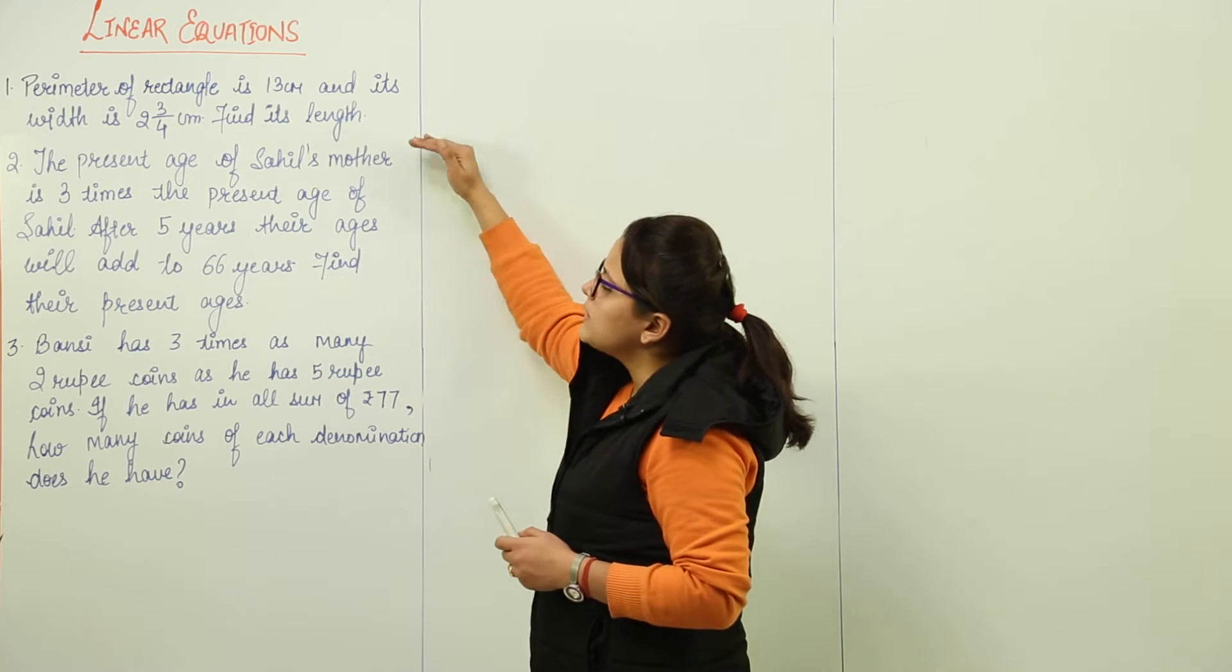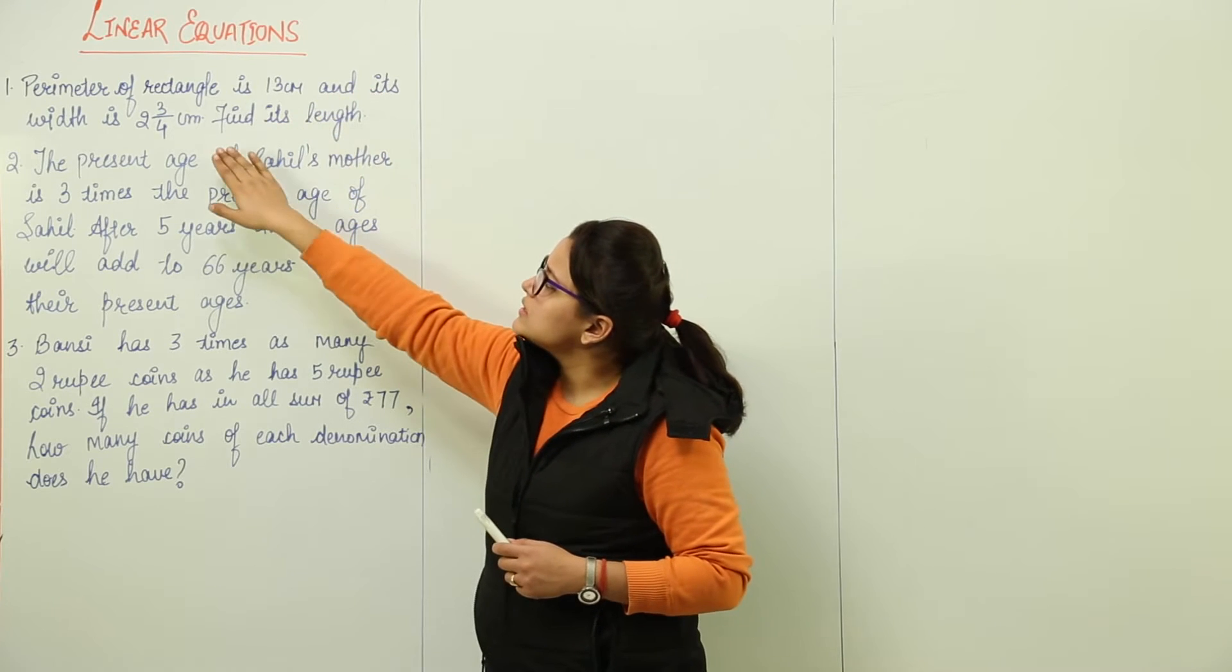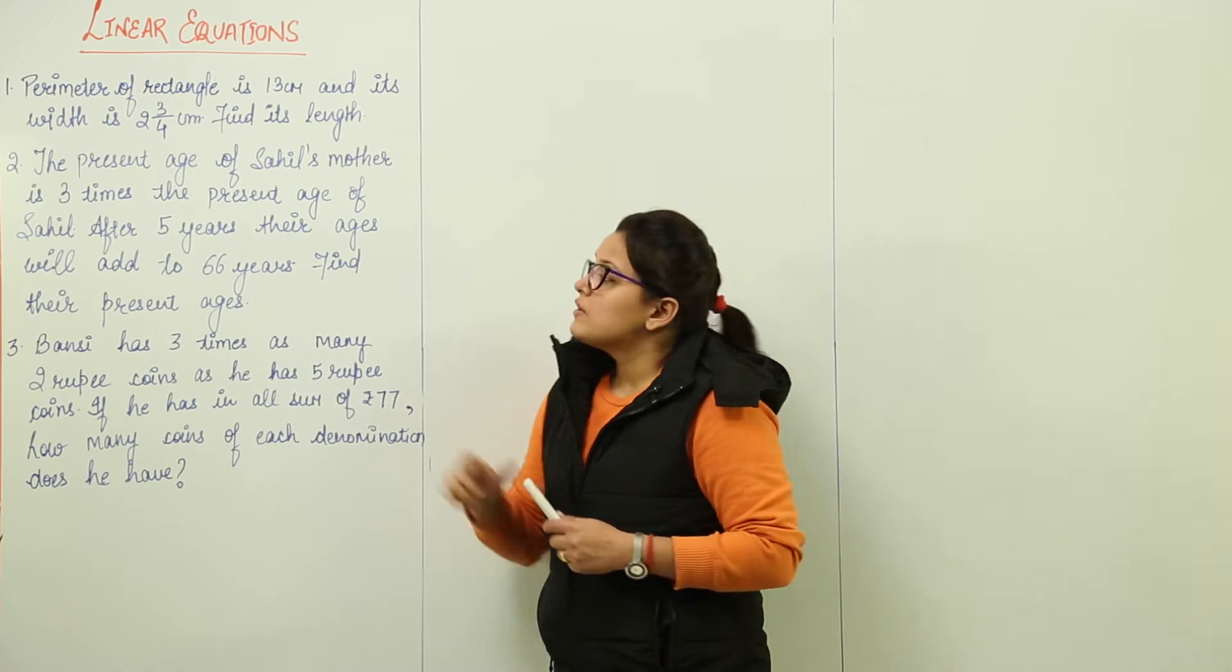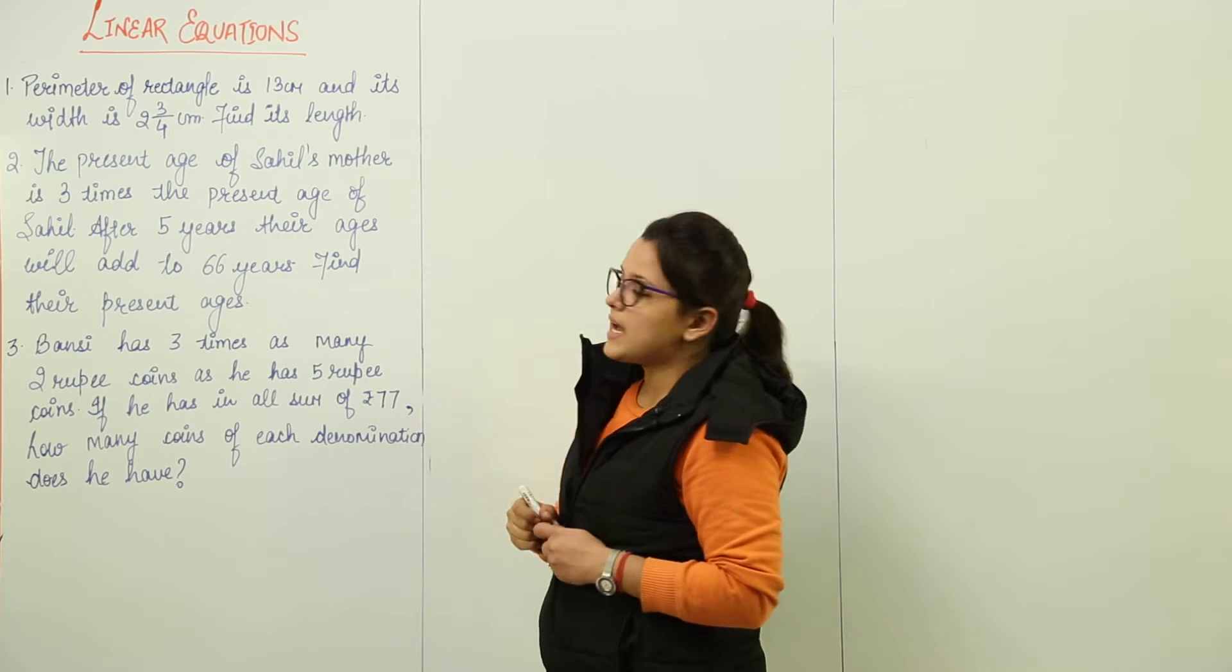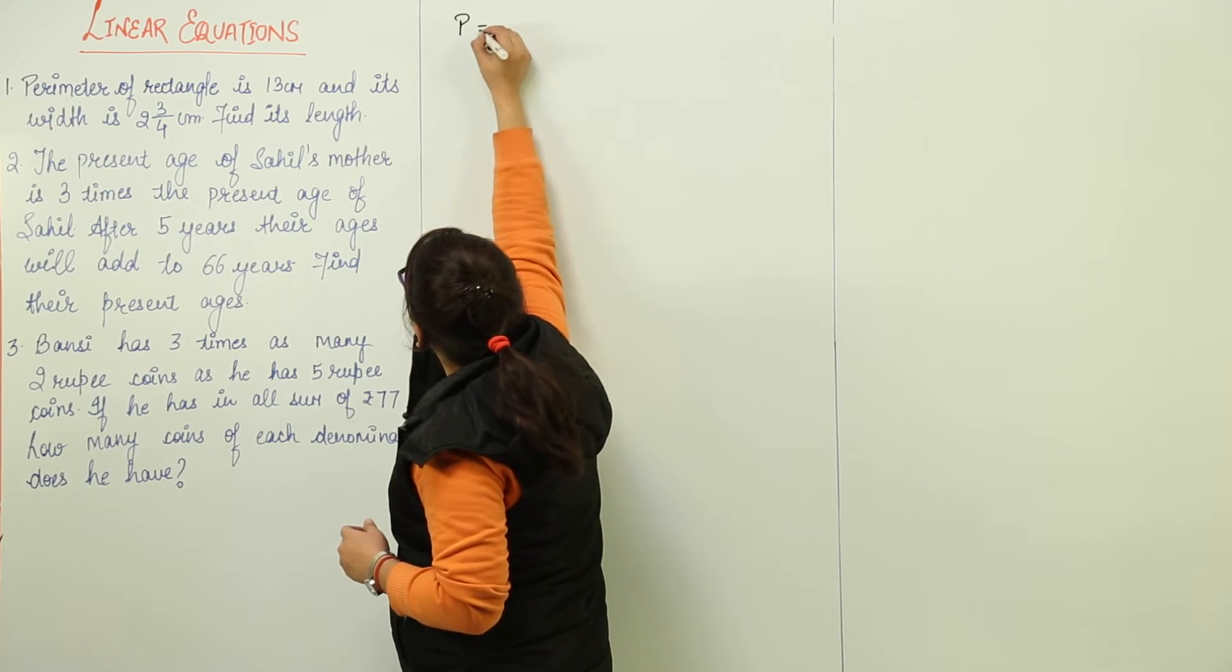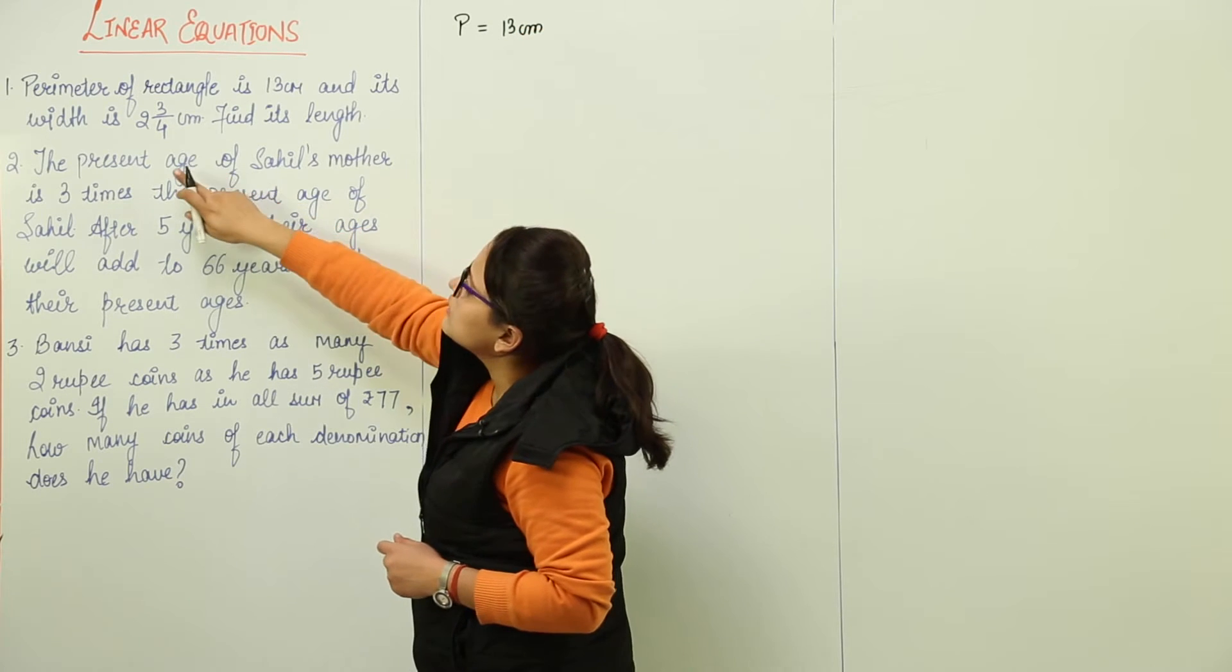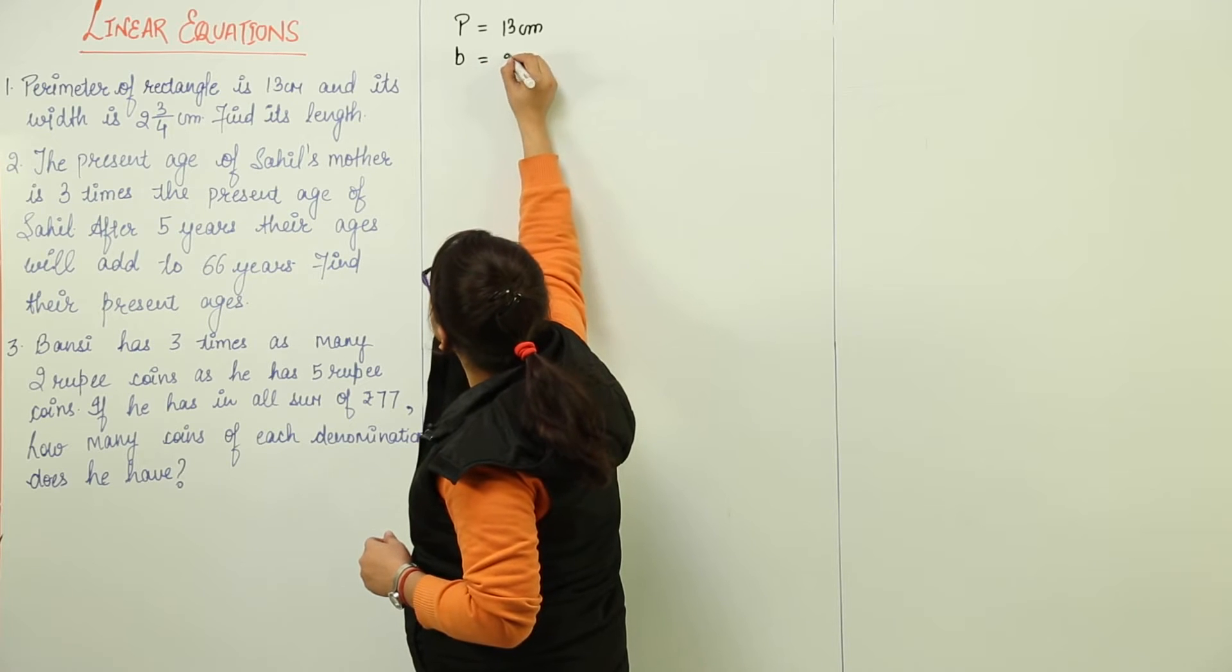The first type would be like this: The perimeter of rectangle is 13 and its width is this, find the length. How do we do this? First write whatever is given in the question. We are given the perimeter of the rectangle which is 13 centimeters. We are given the breadth of the rectangle, 2 whole 3 by 4 centimeters.